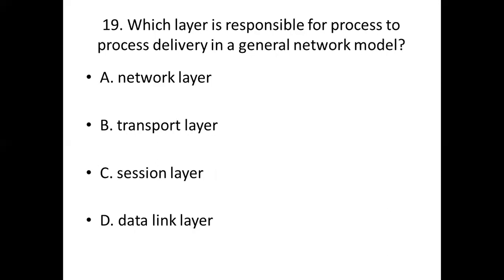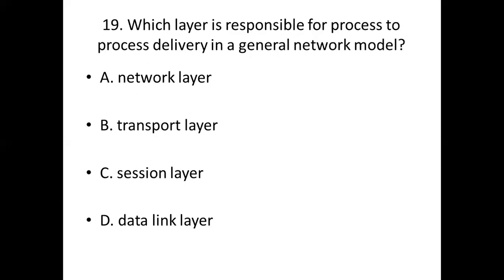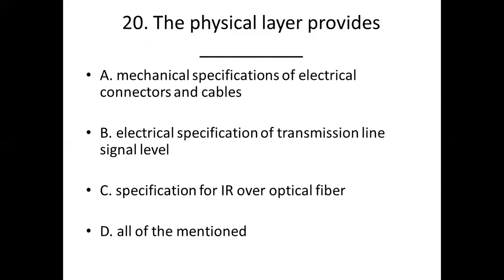Question 19: Which layer is responsible for process-to-process delivery in a general network model? Option A: network layer. Option B: transport layer. Option C: session layer. Option D: data link layer. Answer: Option B, transport layer.